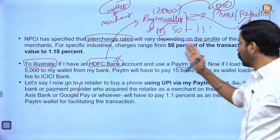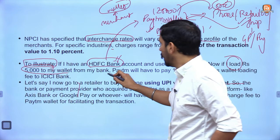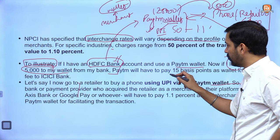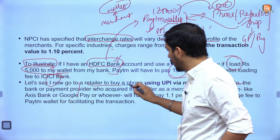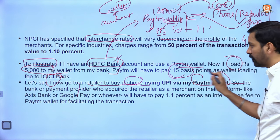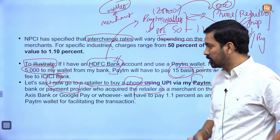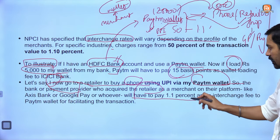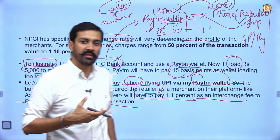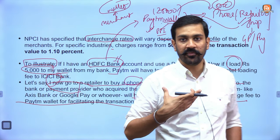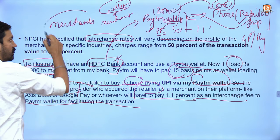You have an HDFC account and you use Paytm. You load rupees 5000 to your wallet from your bank. Paytm will pay some value of the transaction to HDFC bank. You went to a retailer shop to buy a phone using that Paytm wallet. Now the retailer will have to pay 1.1% as an interchange fee to Paytm for facilitating the transaction. This is an interchange fee — it has to be absorbed by merchants, not by customers.